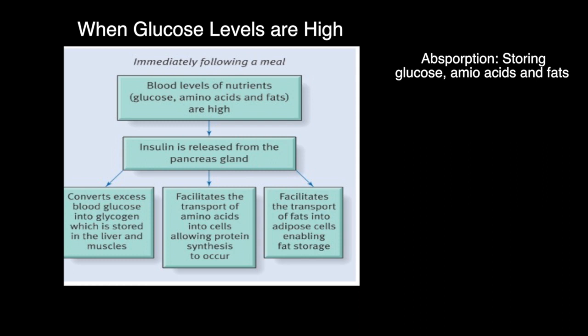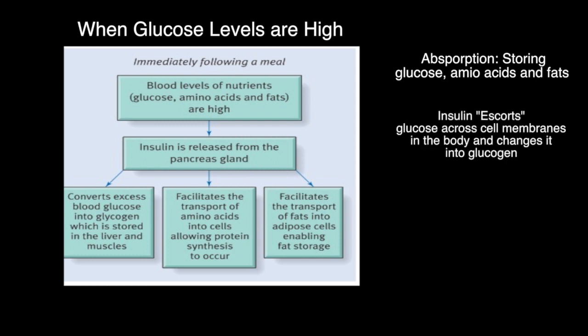Excess amounts of glucose in the bloodstream can cause death. So insulin does not like glucose just roaming around in your bloodstream, wreaking havoc and causing death. What it does is insulin takes the glucose and it transports it across cellular membranes, then turns it into glycogen.